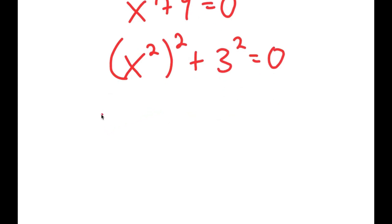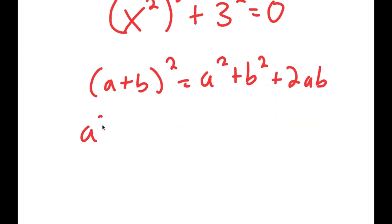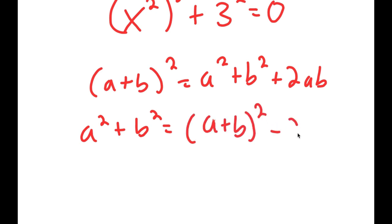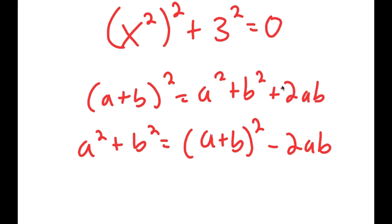And if I have something in the form (a + b) squared, this is equal to a squared plus b squared plus 2ab. And if I have something in the form a squared plus b squared, then this must mean that this is going to equal (a + b) squared minus 2ab, because that is the same thing without the 2ab.